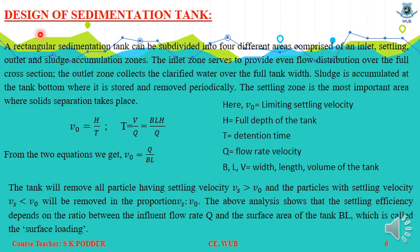Now we look at the design of the sedimentation tank. A rectangular sedimentation tank can be subdivided into four different zones: the inlet zone, the settling zone, the outlet zone, and the sludge zone. The inlet zone provides even flow distribution, the outlet zone collects clarified water, sludge is accumulated at the tank bottom and removed periodically, and the settling zone is the most important area where solid separation takes place.